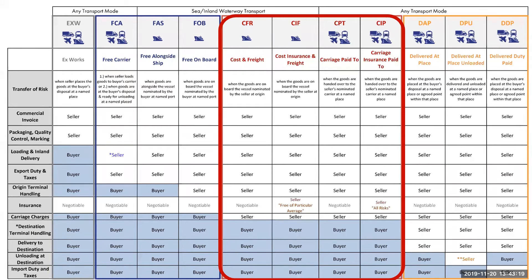You have people in place to get the cargo to wherever they need it or to whatever port they want it to go to. The C terms can also be an area of small profitability for the exporter, because you are providing an additional service — you're not just selling a product, but you're also selling freight. So you can possibly add a small percentage onto the freight charges that you're passing along.